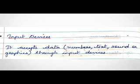A computer will accept data and instructions through input devices. Data can be of any form — that is numbers, text, sound, or graphics. These are input into the computer through these input devices.